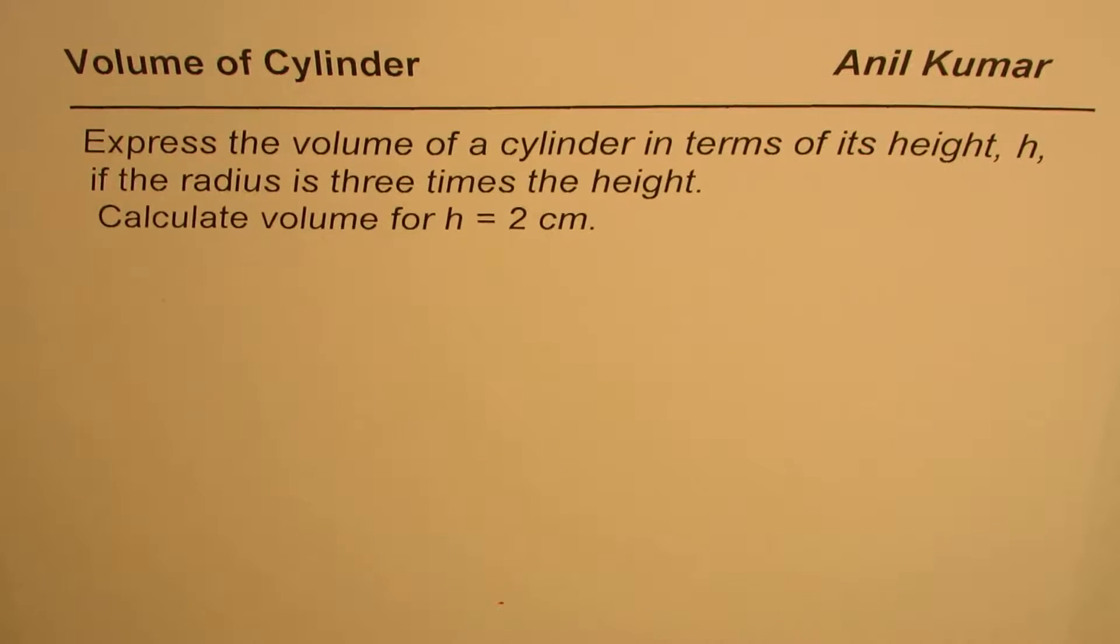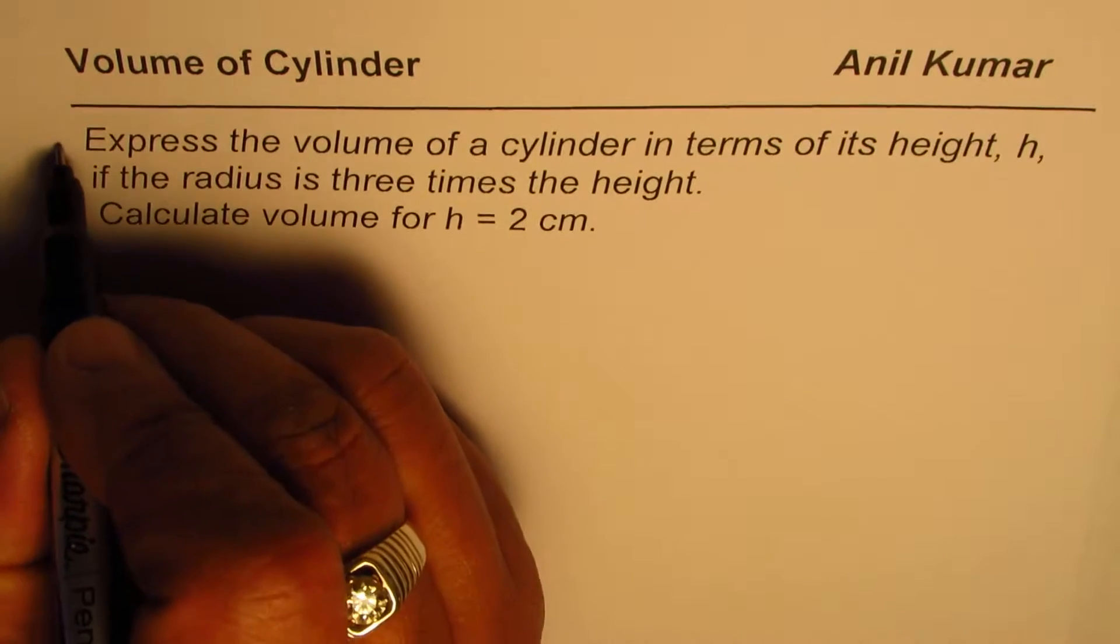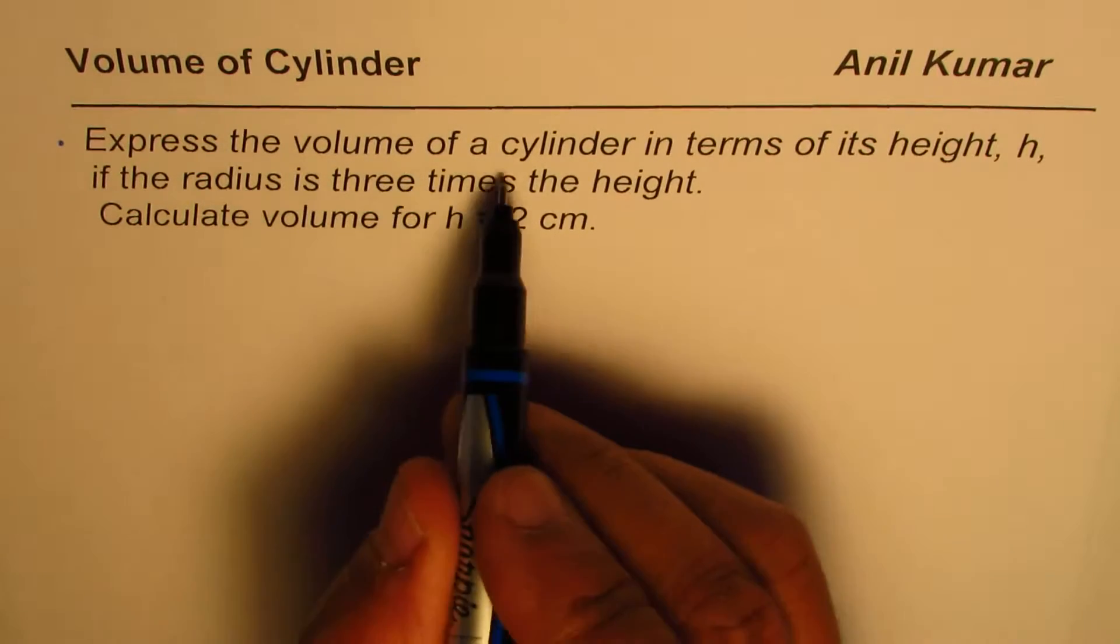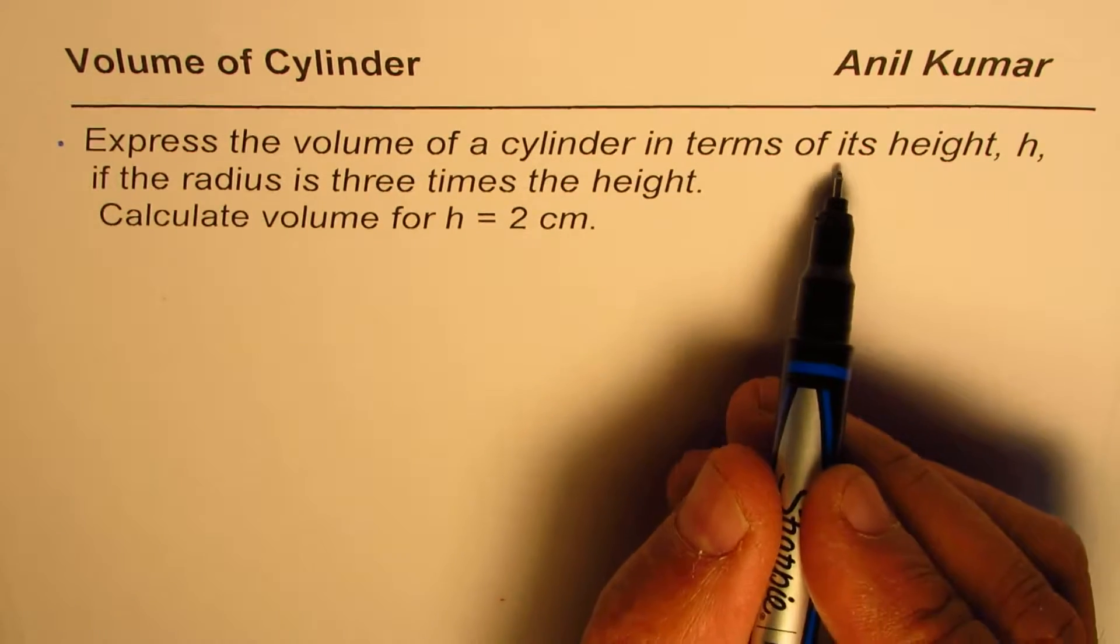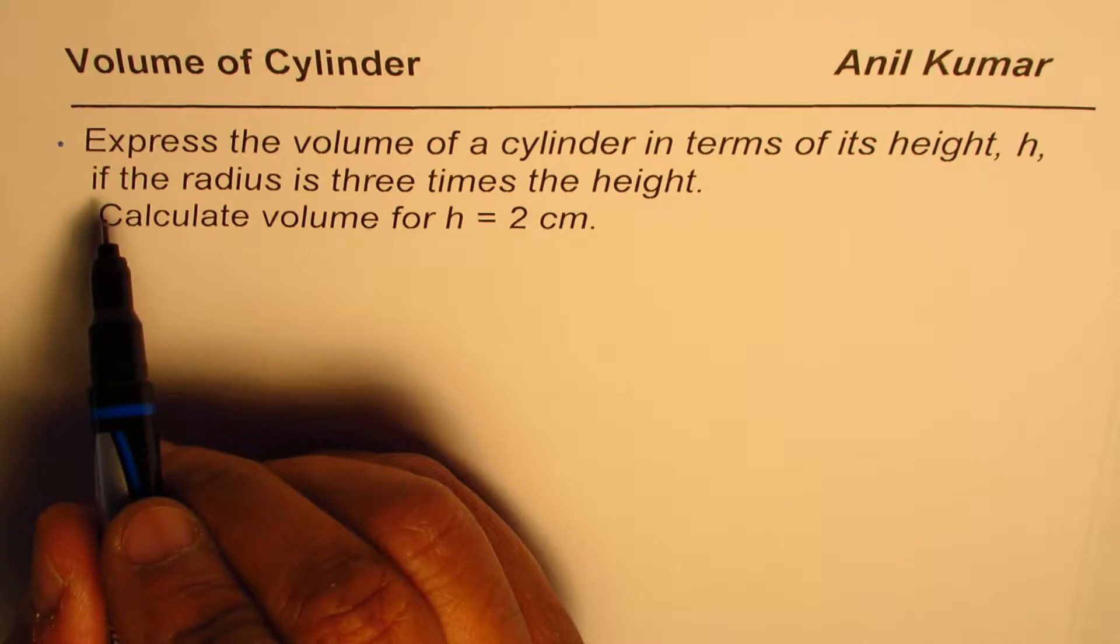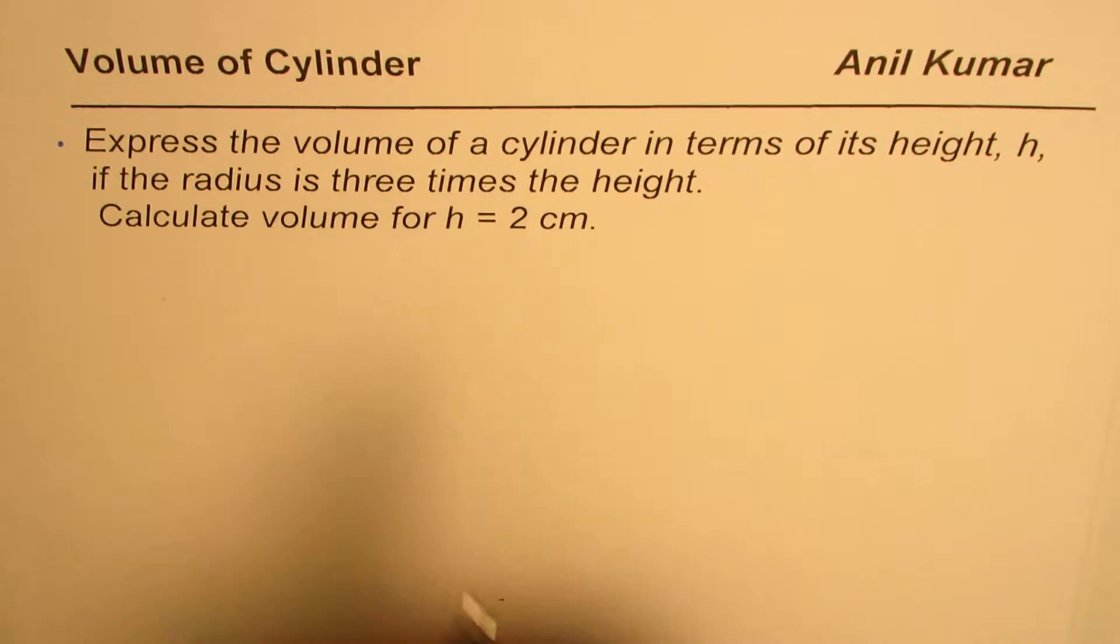In this video, we will understand how to write formulas in one particular variable. The question here is: express the volume of a cylinder in terms of its height h, if the radius is three times the height.